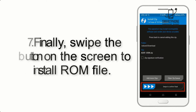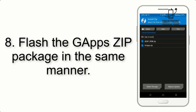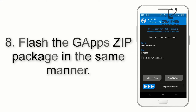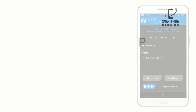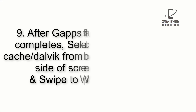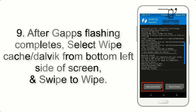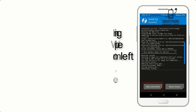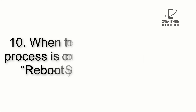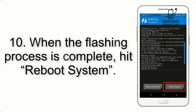Step 8: Flash the GApps zip package in the same manner. Step 9: After GApps flashing completes, select Wipe Cache and Dalvik from the bottom left side of the screen and swipe to wipe. Step 10: When the flashing process is complete, hit Reboot System.